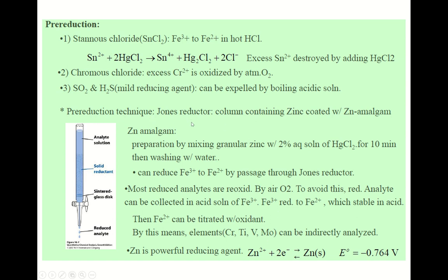The Jones reductor works because zinc has E⁰ = −0.764 V, making it a mild reducing agent. Lithium or sodium have much stronger reduction power — so strong they can even reduce water, which should be avoided.